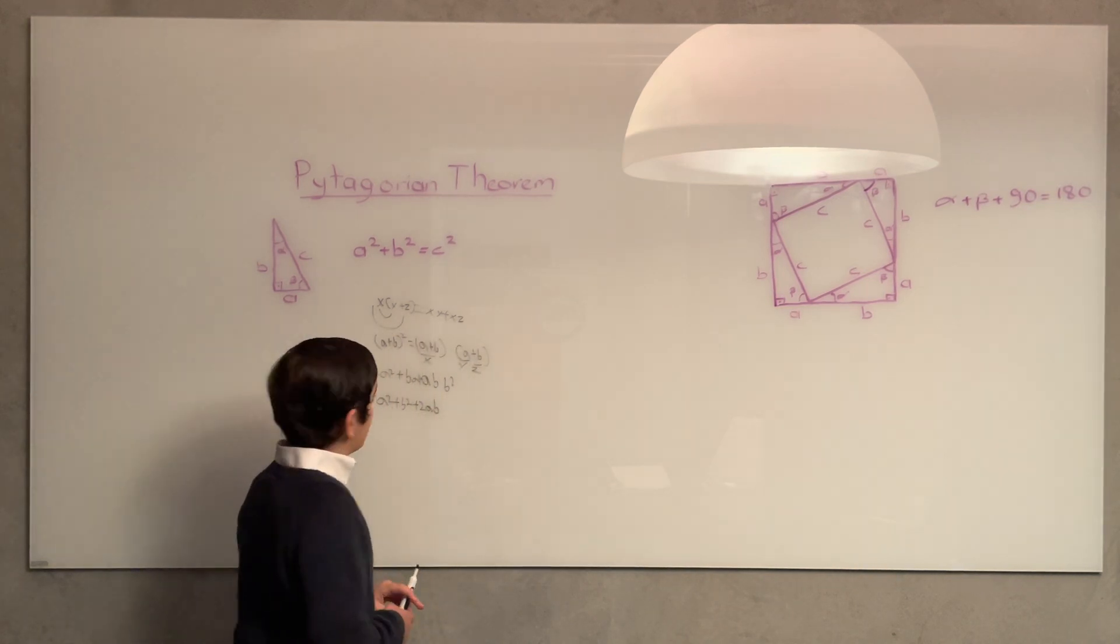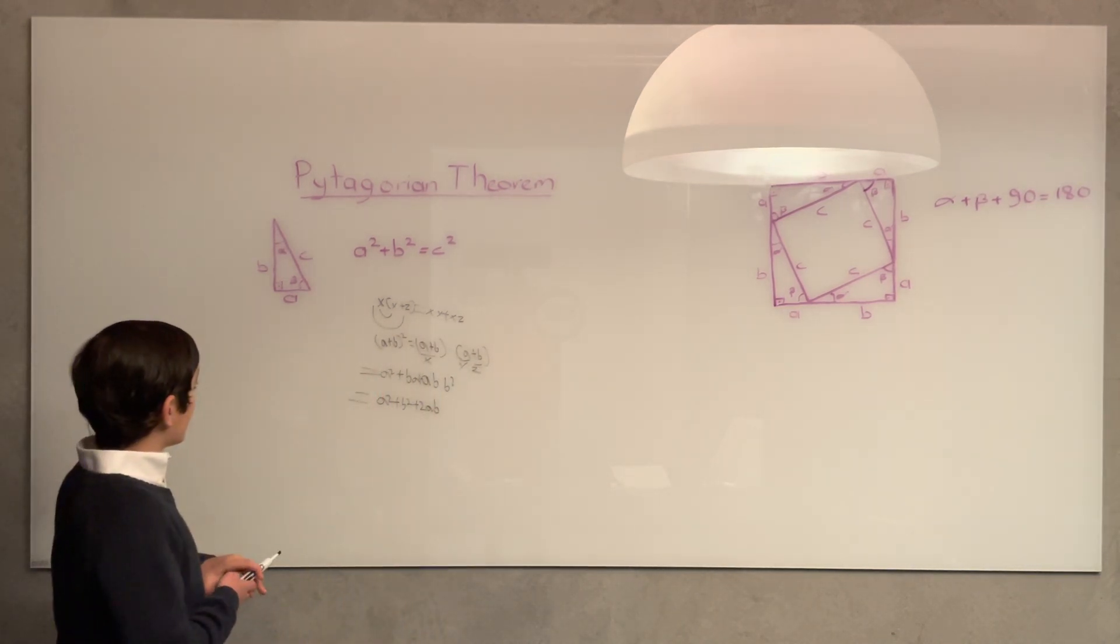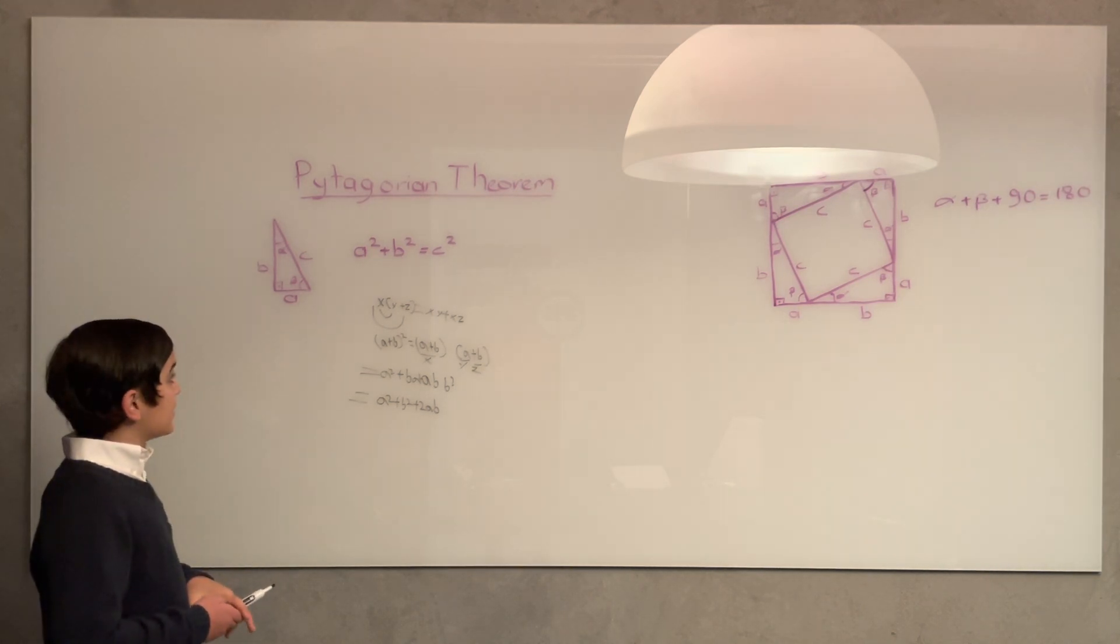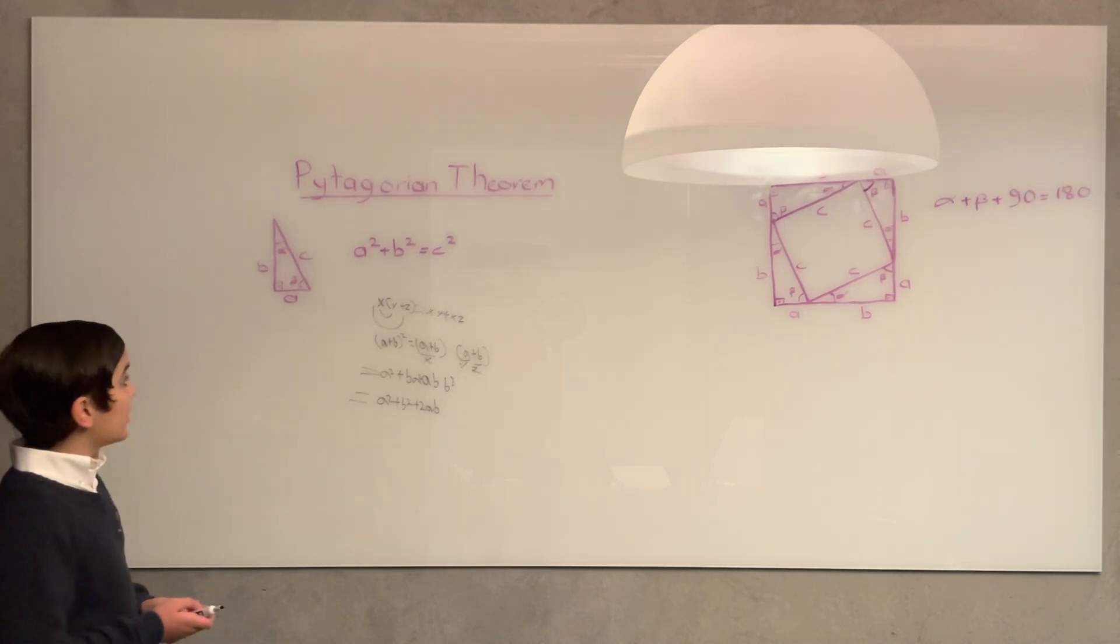Now, we're going to come back to this. Right here we have a right triangle with sides a, b, and c, and angles alpha and beta.